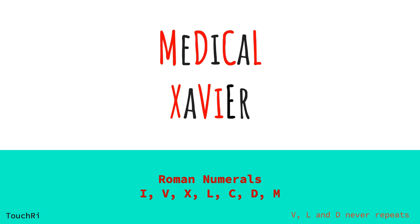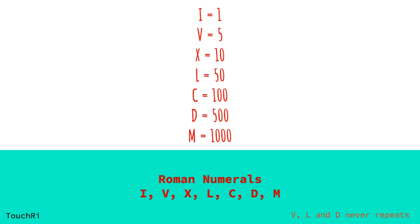Let me give you the numeric values of all these symbols. I represents 1, V represents 5, X represents 10, L represents 50, C is 100, D is 500, and finally M represents 1000.